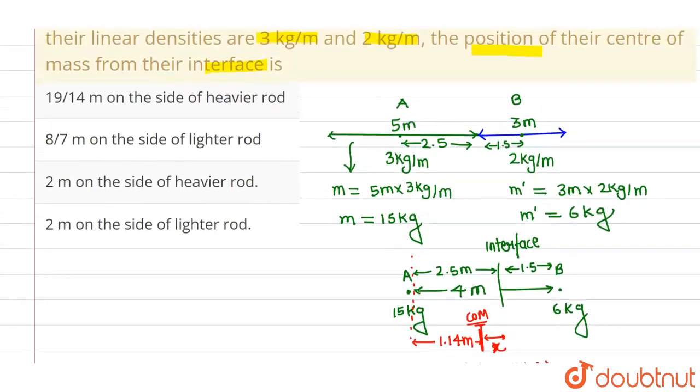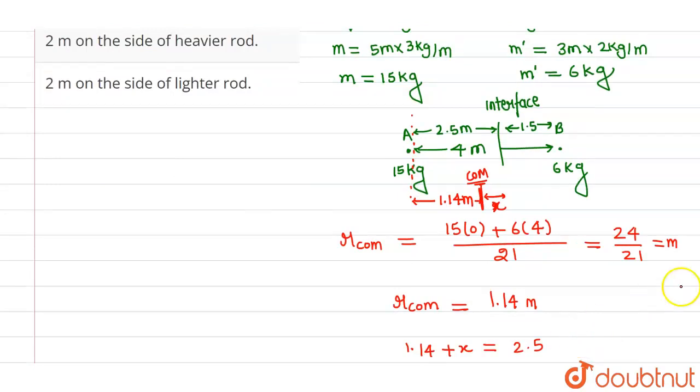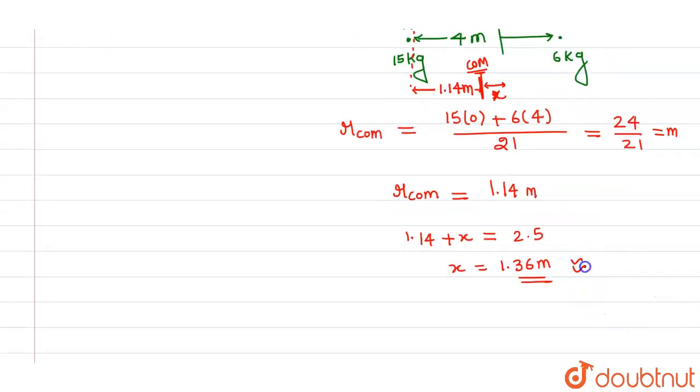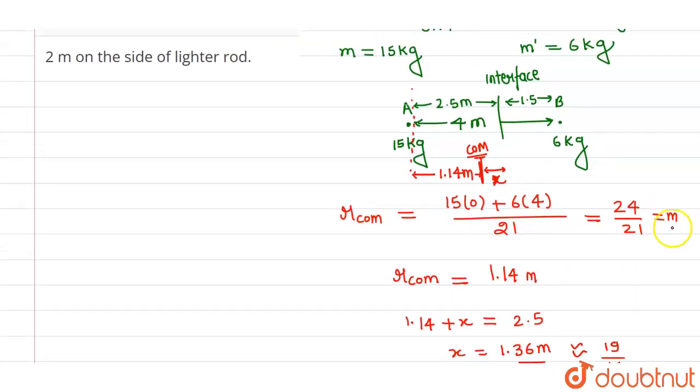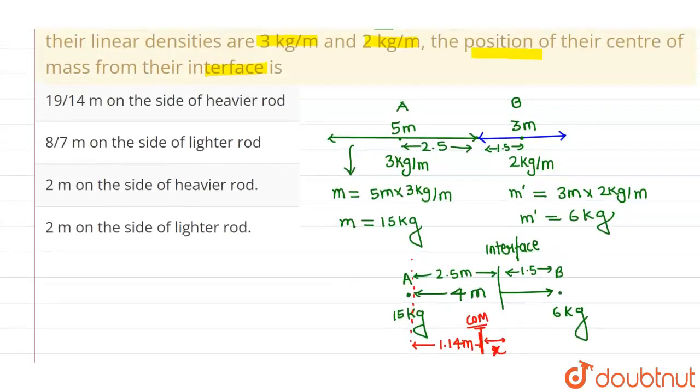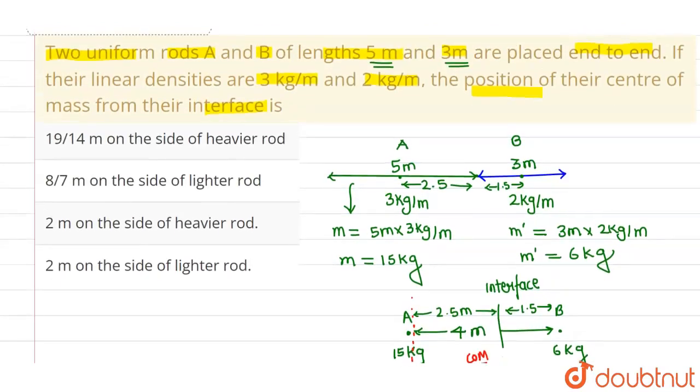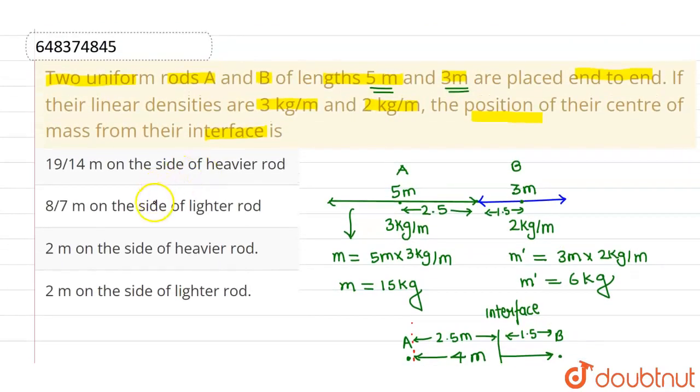And 1.36m is approximately 19 by 14. This is same as 19 by 14. So from the interface, this is towards the heavier rod and at a distance of 19 by 14 from the interface. So the correct option is 19 by 14 on the side of heavier rod from the interface. So option A is correct, and rest all options are incorrect.